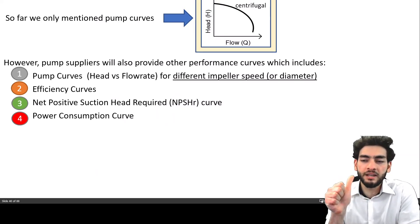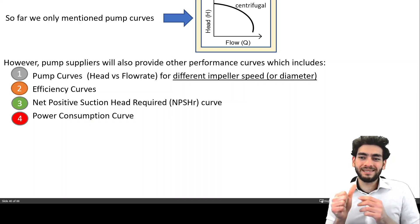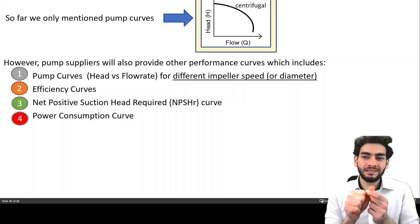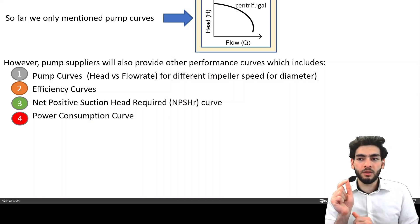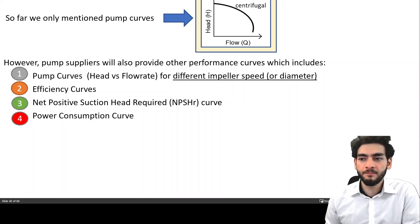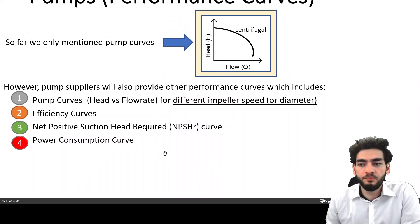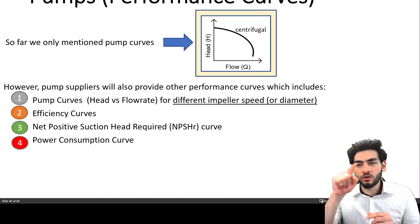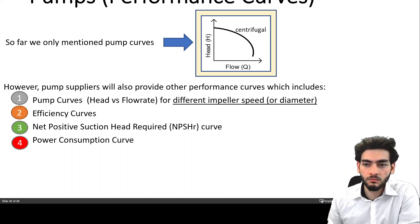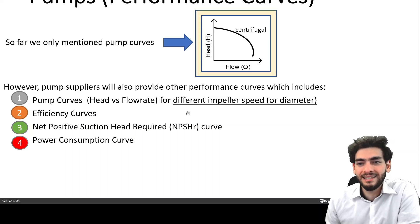They should be providing you pump curves, which is basically pressure or head that the pump delivers versus the flow rate of the pump that it will deliver at. And the pump curves could provide you for different impeller speeds or different diameters, and we'll see what that means in a second.